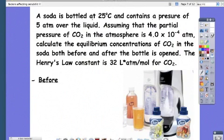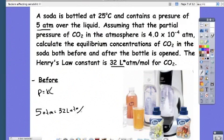We're solving for before. So before the soda is opened, we have 5 atm of pressure over the liquid. Henry's Law constant for CO2 is 32 L·atm/mol, and this would be different if it was a different substance. So our equation: P equals KC. Pressure is 5 atm—the pressure we were bottling it at. K is 32 L·atm/mol, and we're looking for concentration. Solving it out, we get 0.156 moles per liter, or molarity.